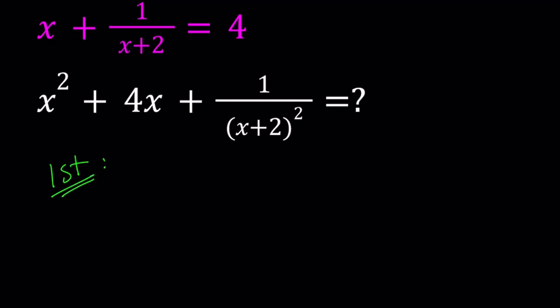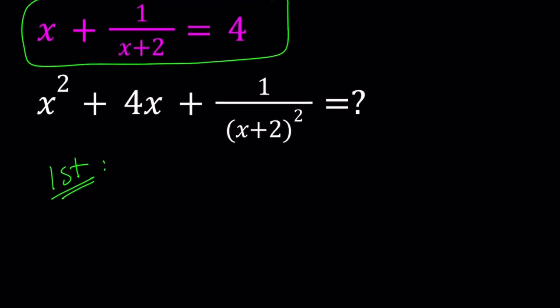For my first method, I'm going to start working with this expression. Since I don't know the answer to this one, that's what I'm trying to find. I'm going to make a common denominator. That's going to give me x² + 2x + 1, and then I will divide this by x + 2, and that is equal to 4.